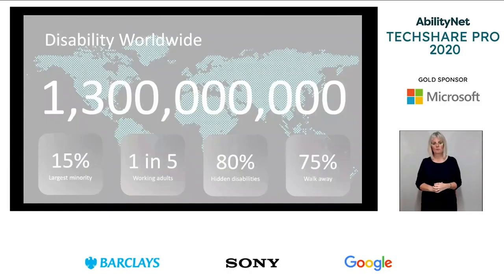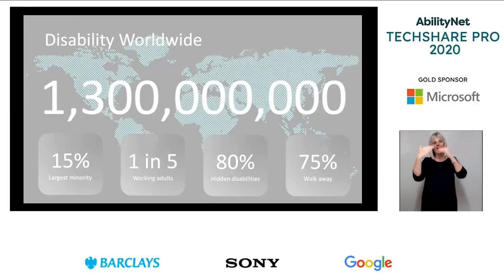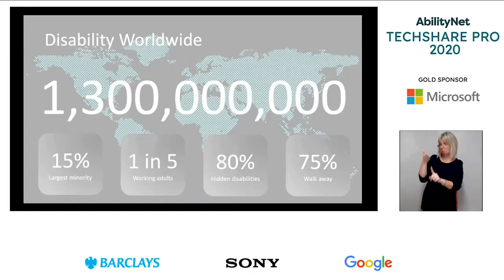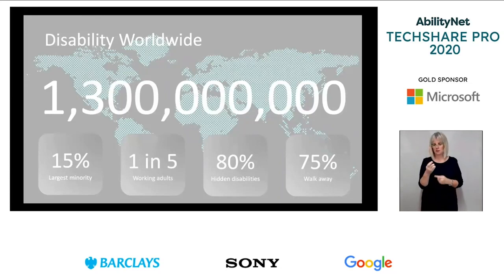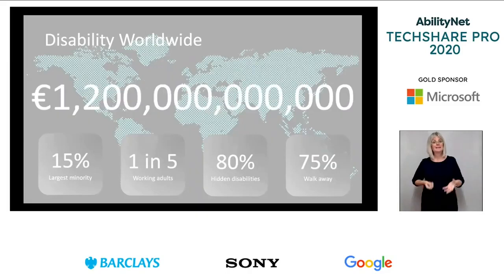Disability Worldwide: The World Health Organisation estimates that 1.2 billion people are disabled globally, or about 15% of the world's population. 1 in 5 working adults have a disability, and 80% of disabilities are hidden, which means that you may not be aware of it, and individuals may not wish to disclose it. 75% of people with a disability have walked away from either a business or a job due to barriers associated with accessibility. The disposable income globally of disabled people is estimated to be over a trillion dollars, making disabled people the largest minority group in the world with enormous spending power.